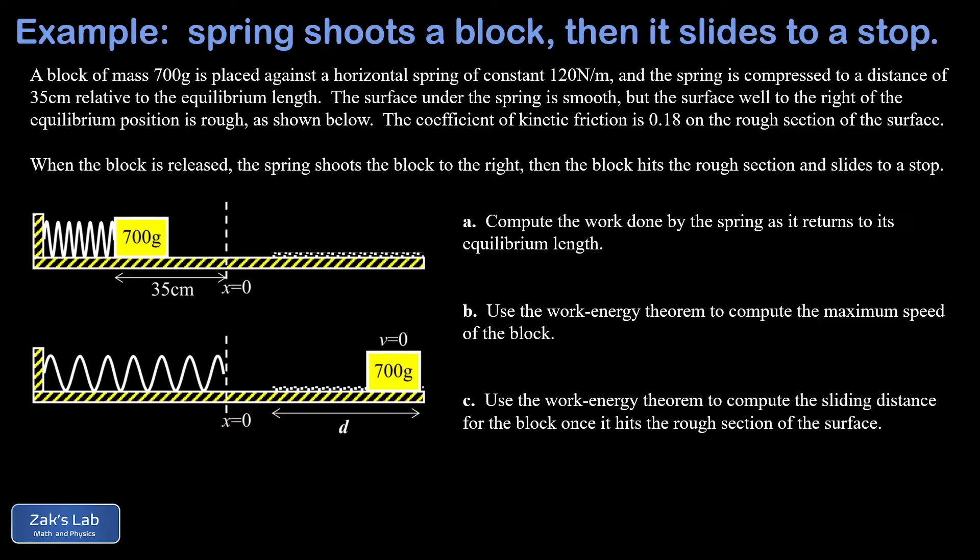We're told our block is 700 grams. It's squished into this spring that has a constant of 120 newtons per meter. I'll go ahead and copy that number down here. It's squished by 35 centimeters in its initial state and released from rest. And then the rough patch, well to the right of the equilibrium position, has a coefficient of friction given by 0.18.